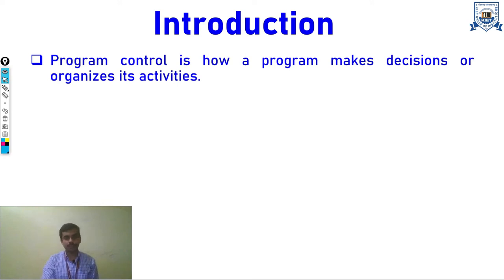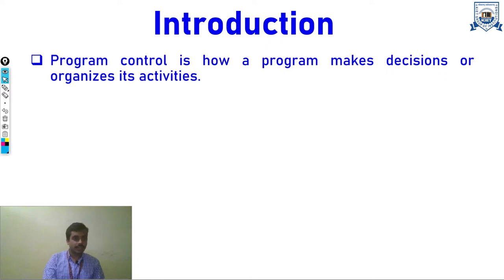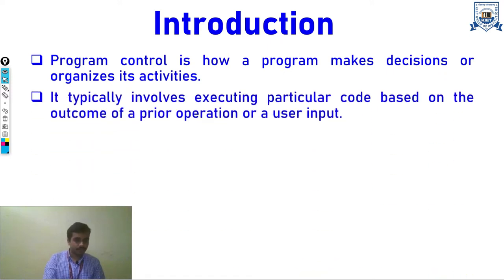Program control is basically about how our program makes decisions or organizes activities during execution — like if-else conditions, where if any code is executed, it points to another set of instructions. That redirection is done with the help of program control. It typically involves executing particular code based on the outcome of a prior operation or a user input.